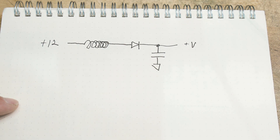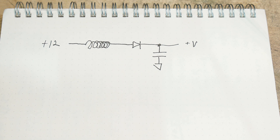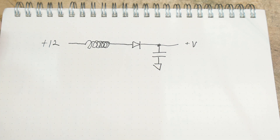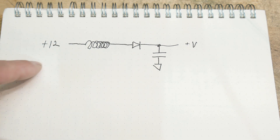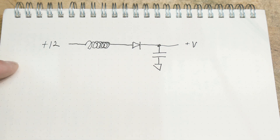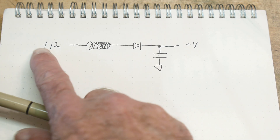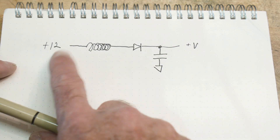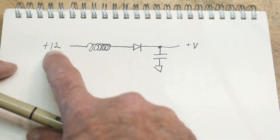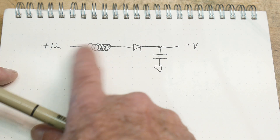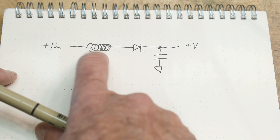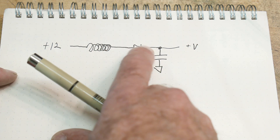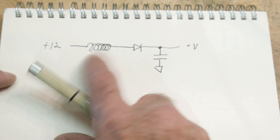This is going to be all about up-converting DC to DC converters. This is the basic circuit of a DC converter. There's some input voltage — I'm going to be using 12 volts. And then there's some type of inductor, a diode, and a capacitor.